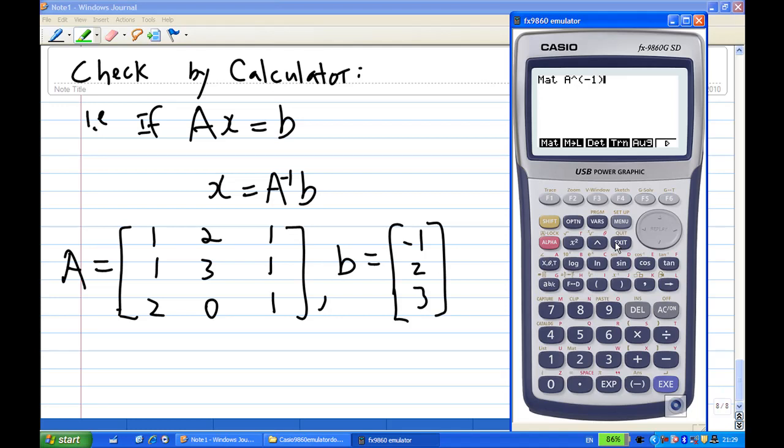Then, multiply by matrix b. F1 for matrix, alpha b. So, let's multiply and see what do I get. I find that the answer is 10, 3, -17, which is correct and agrees with our calculation earlier.